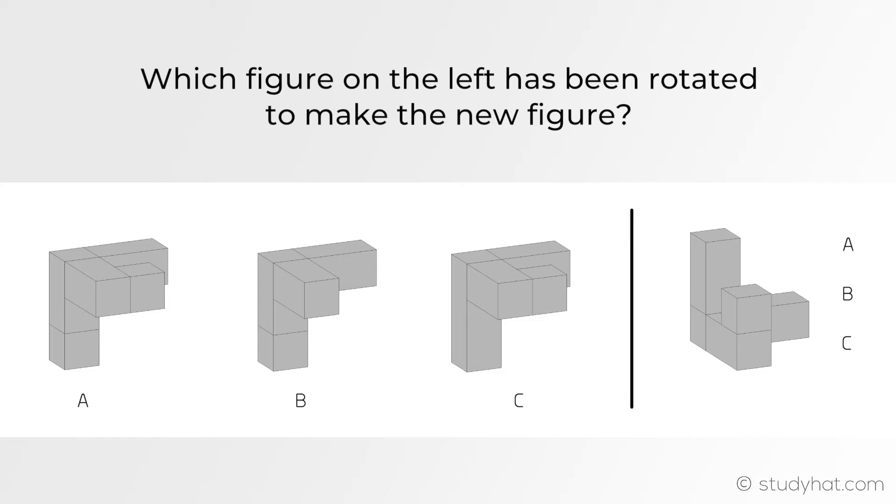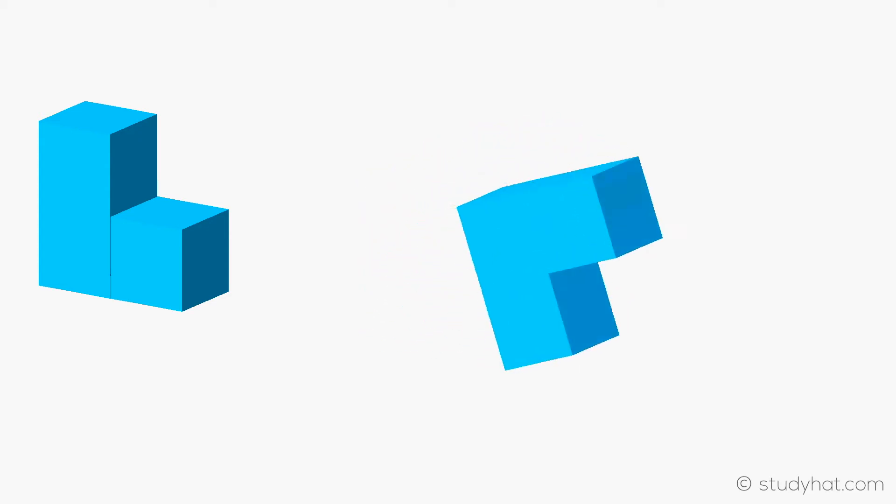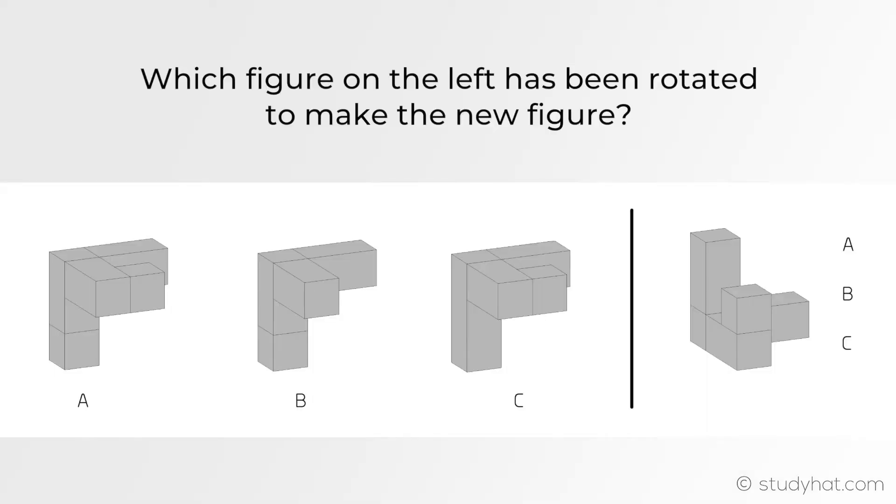Before we tackle the question, 3D shapes can be rotated in three planes, which is like a flat surface. The first one is 90 degrees towards you, top to bottom. The second way is 90 degrees left to right, or 90 degrees right to left. The last plane of rotation is 90 degrees anticlockwise going backwards, or 90 degrees clockwise going forwards. If you understand the different ways in which a 3D shape can be rotated, it makes visualizing the answer easier for you.